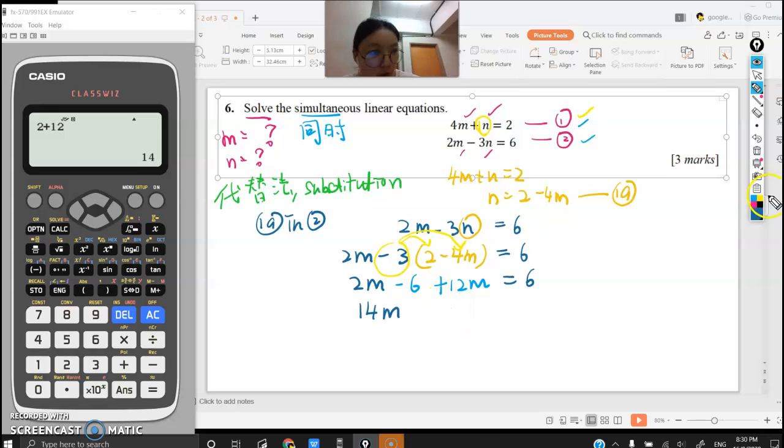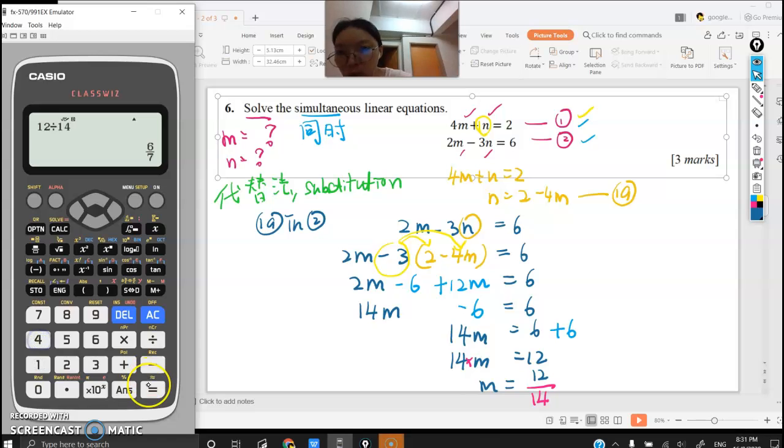Combining M terms together: I have 2M plus 12M, so 2M plus 12M equals 14M total. So 14M minus 6 equals 6. Moving the number across: negative 6 becomes plus 6, so 14M equals 12. Then dividing: M equals 12 divided by 14, which simplifies to 6/7.